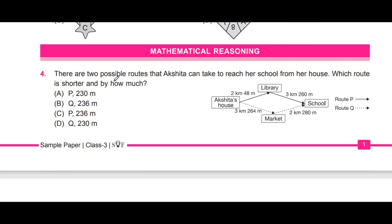Now for mathematical reasoning skills. The first question: there are two possible routes Akshita can take from home to school. Which route is shorter and by how much? Route P goes from Akshita's house to the library then to school; route Q goes from Akshita's house to the market then to school. We need to find which is shorter and by how much.